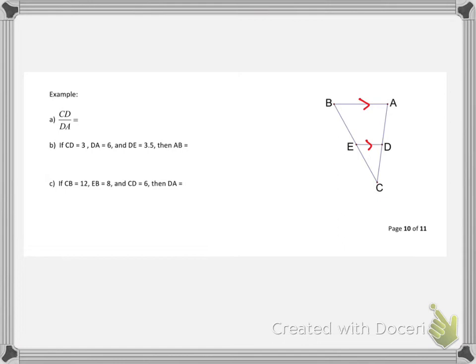For example, A here, it says CD over DA. If we know the two sides that I just marked are parallel, if CD compares to DA, that would mean CE has to compare to EB. We're going to tuck that little proportion away to maybe help us with parts B or C. Looking at this diagram here, let's go ahead and take a look at B. I'm going to label it with the information that's presented. CD is 3, DA is 6, DE is 3 1/2. We're trying to find AB.